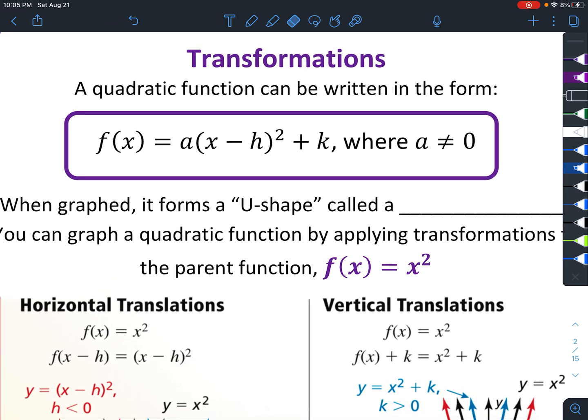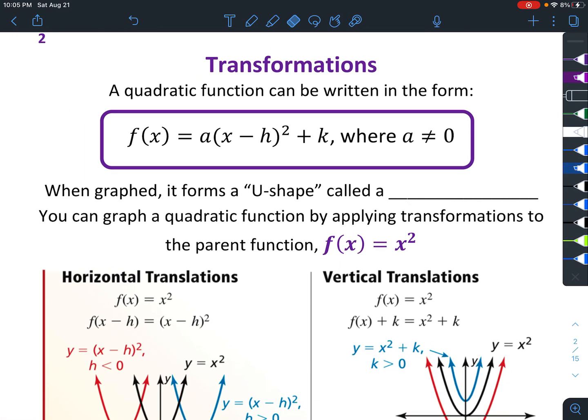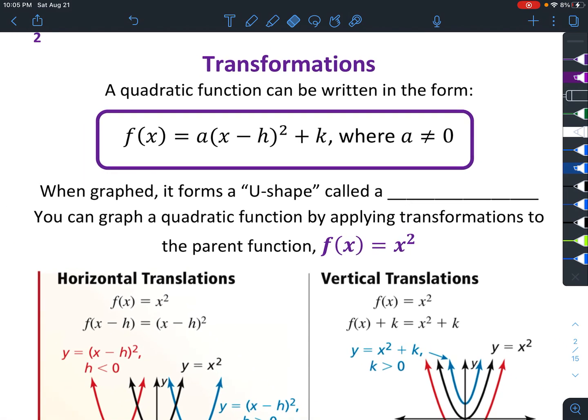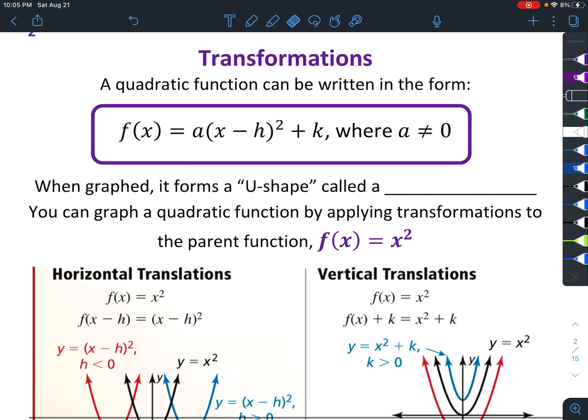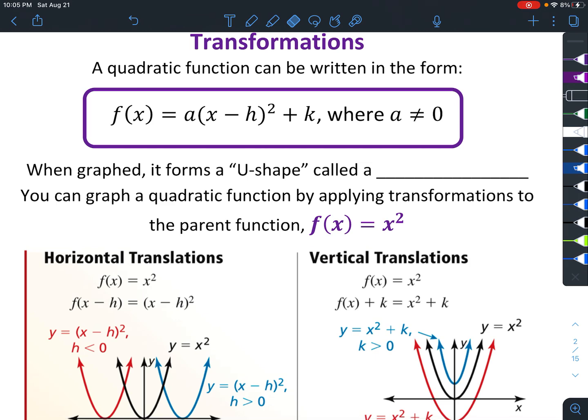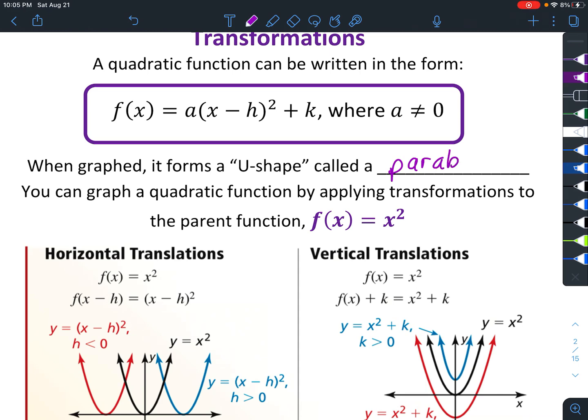It makes it really easy to tell how it changes from the shape of the parent graph. The parent graph is the basic f(x) = x². When graphed, it forms a U-shape called a parabola. That's any quadratic equation—it forms a parabola.